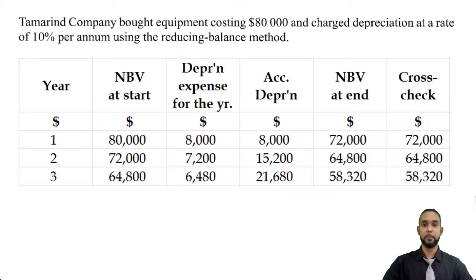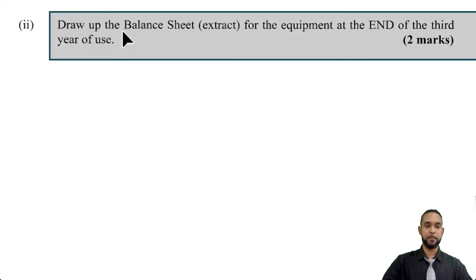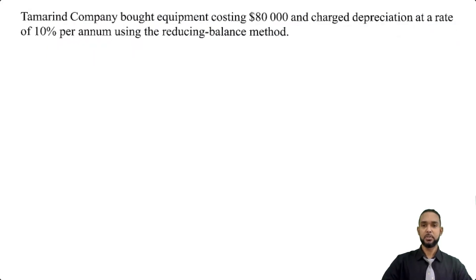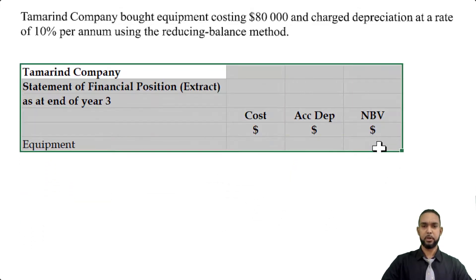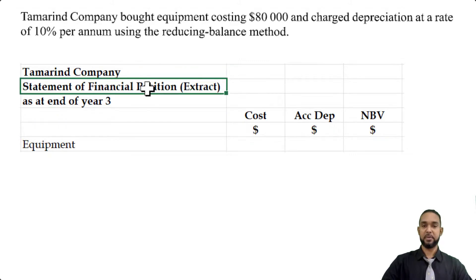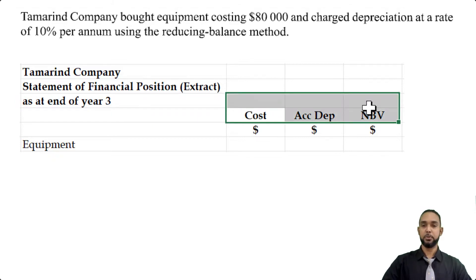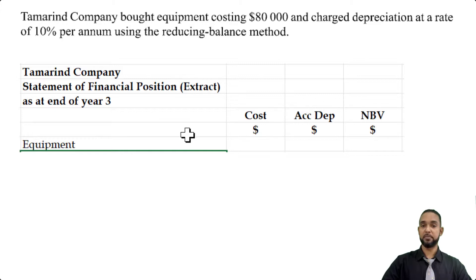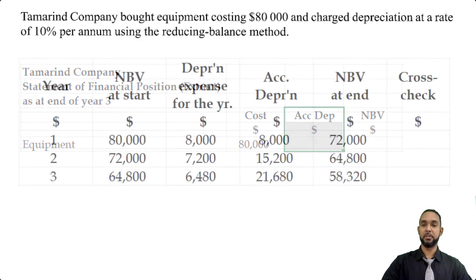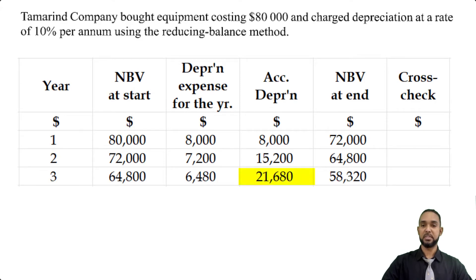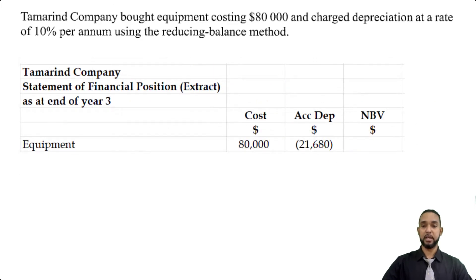The final part asks us to draw up the balance sheet extract for the equipment at the end of the third year of use, using the non-current asset section from a statement of financial position. Head it up as: Tamron Company, Statement of Financial Position (Extract), as at the end of year three. The column headings are cost, accumulated depreciation, and net book value. The cost of the equipment is $80,000; accumulated depreciation at the end of year three is $21,680; and subtracting across gives a net book value of $58,320.